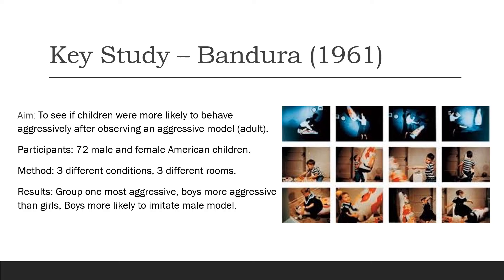For the non-aggressive group, the adults were in the room but played nicely with other toys and did not go near the bobo doll. In the control group, there was no adult in the first room. After this, all three groups had the same experiences in rooms two and three, with each child tested individually. In room two, every child went through the aggression arousal stage — they were placed with very nice toys, then an adult told them these toys were reserved for the very best children and they had to leave. In room three, children were left to play freely with any toy, including a bobo doll, without adult supervision, and their behaviours were observed and tallied in behavioural categories.